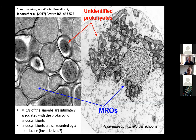It seems like these organisms are not free in the cytoplasm, but are surrounded by a membrane — possibly inside a vacuole that might be host-derived. At this time, these prokaryotes were unidentified. We didn't know what these organisms were, not even what class or broader group they belong to.